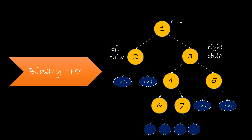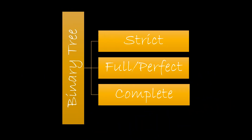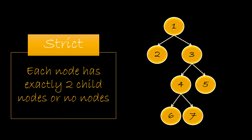By default, if a node is a leaf node, its left and right child are null, as shown here. A binary tree can be classified into three types: a strict binary tree, a full or perfect binary tree, and a complete binary tree. A strict binary tree is the one in which each node strictly has two children or none. In the diagram, you can see that each node has both left and right child nodes or has no child node at all.